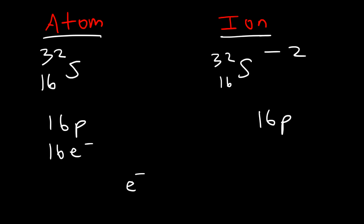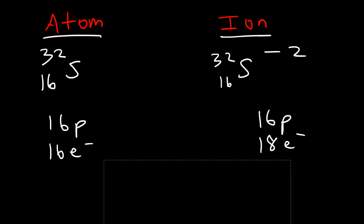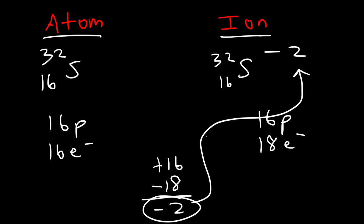For the ion, you calculate the number of electrons by taking the atomic number 16 and subtracting the net charge. So 16 minus negative 2 is the same as 16 plus 2, which is 18. Whenever you have a negatively charged anion, the number of electrons is greater than the number of protons, and that's why the net charge is negative. For this ion, 16 protons (+16) and 18 electrons (−18) give a net charge of −2.